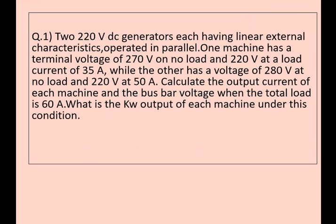Question number 1. Two 220 volt DC generators each having linear external characteristic operated in parallel. One machine has a terminal voltage of 270 volt on no load and 220 volt at a load current of 35 ampere.